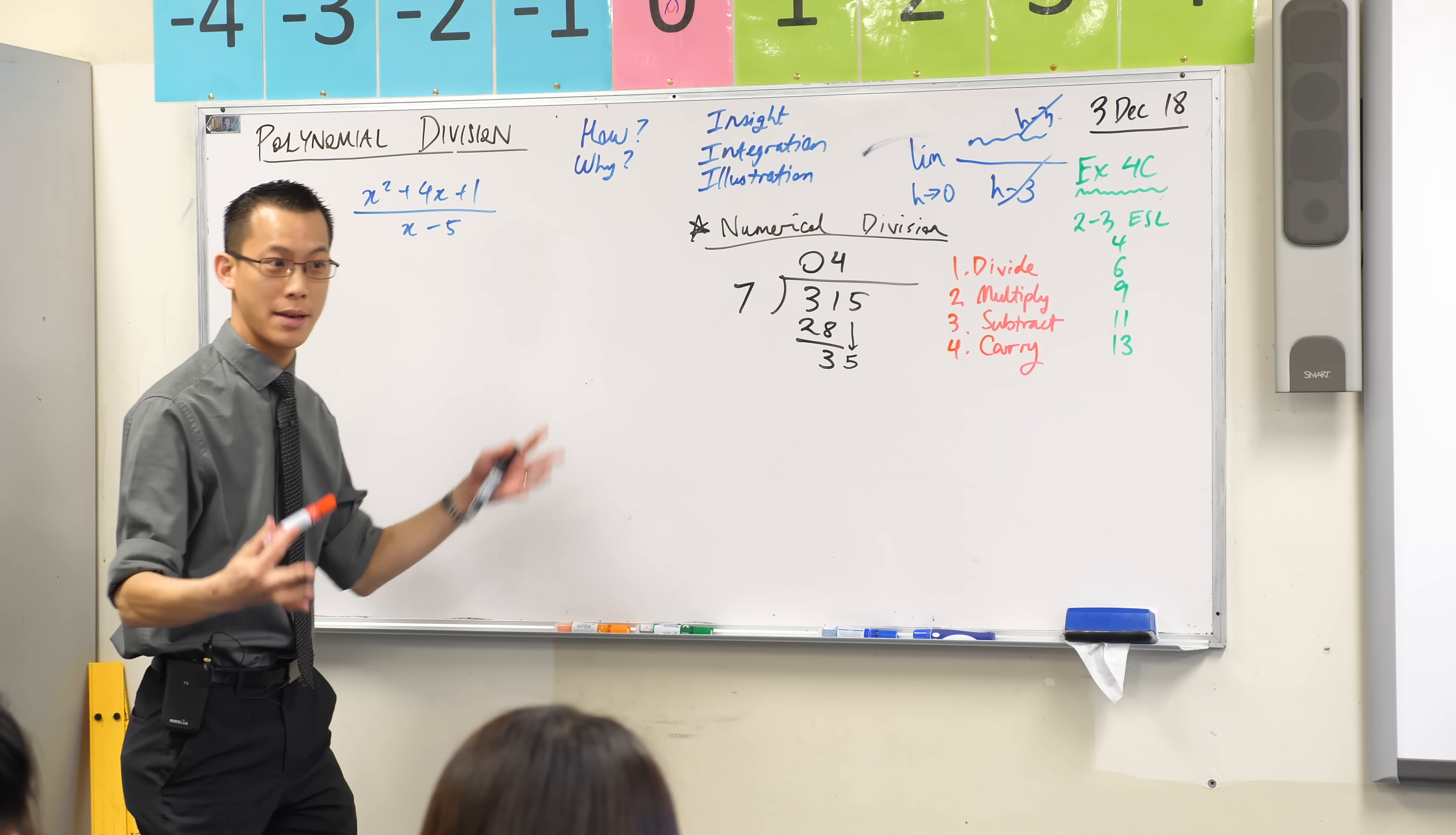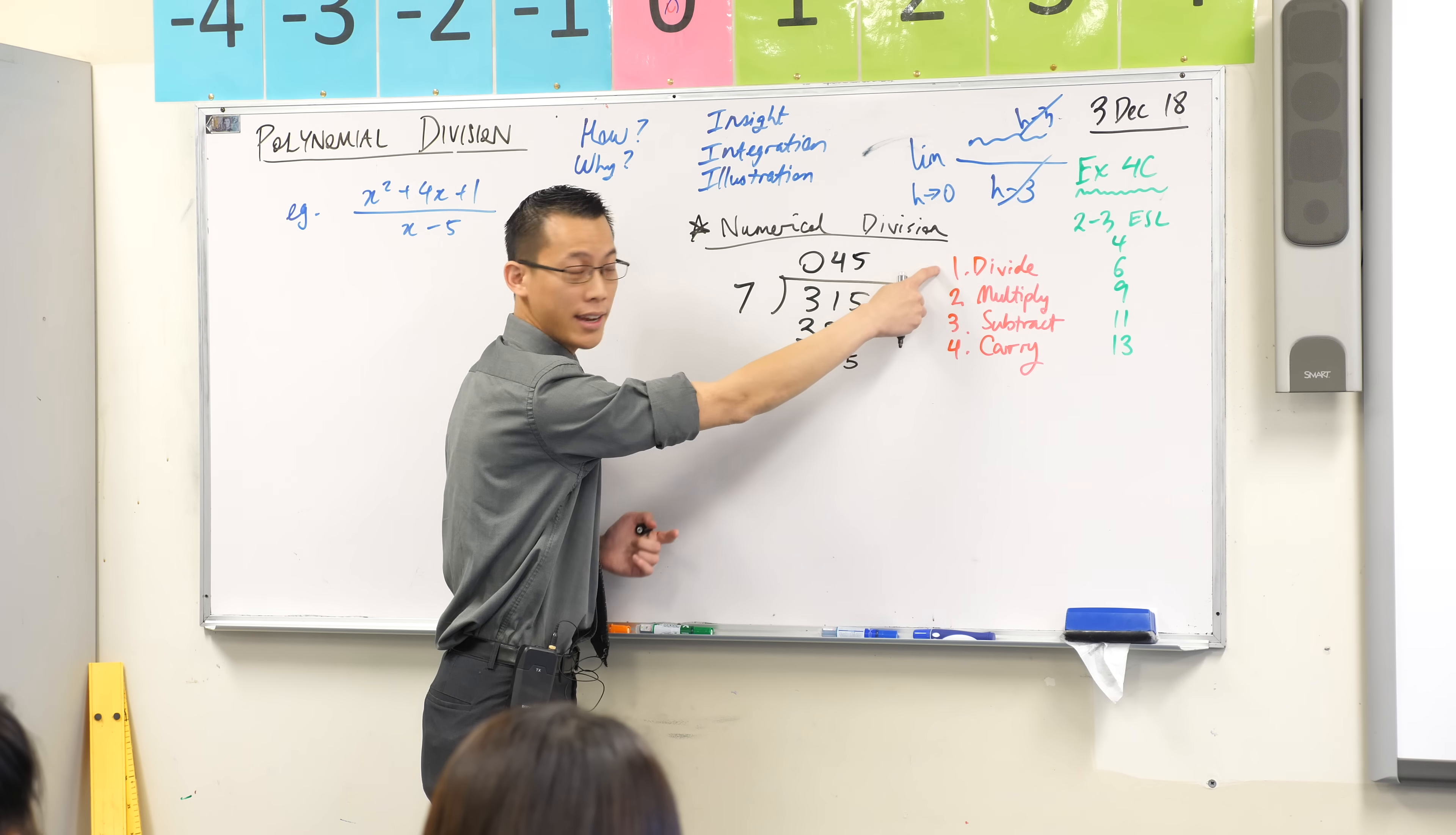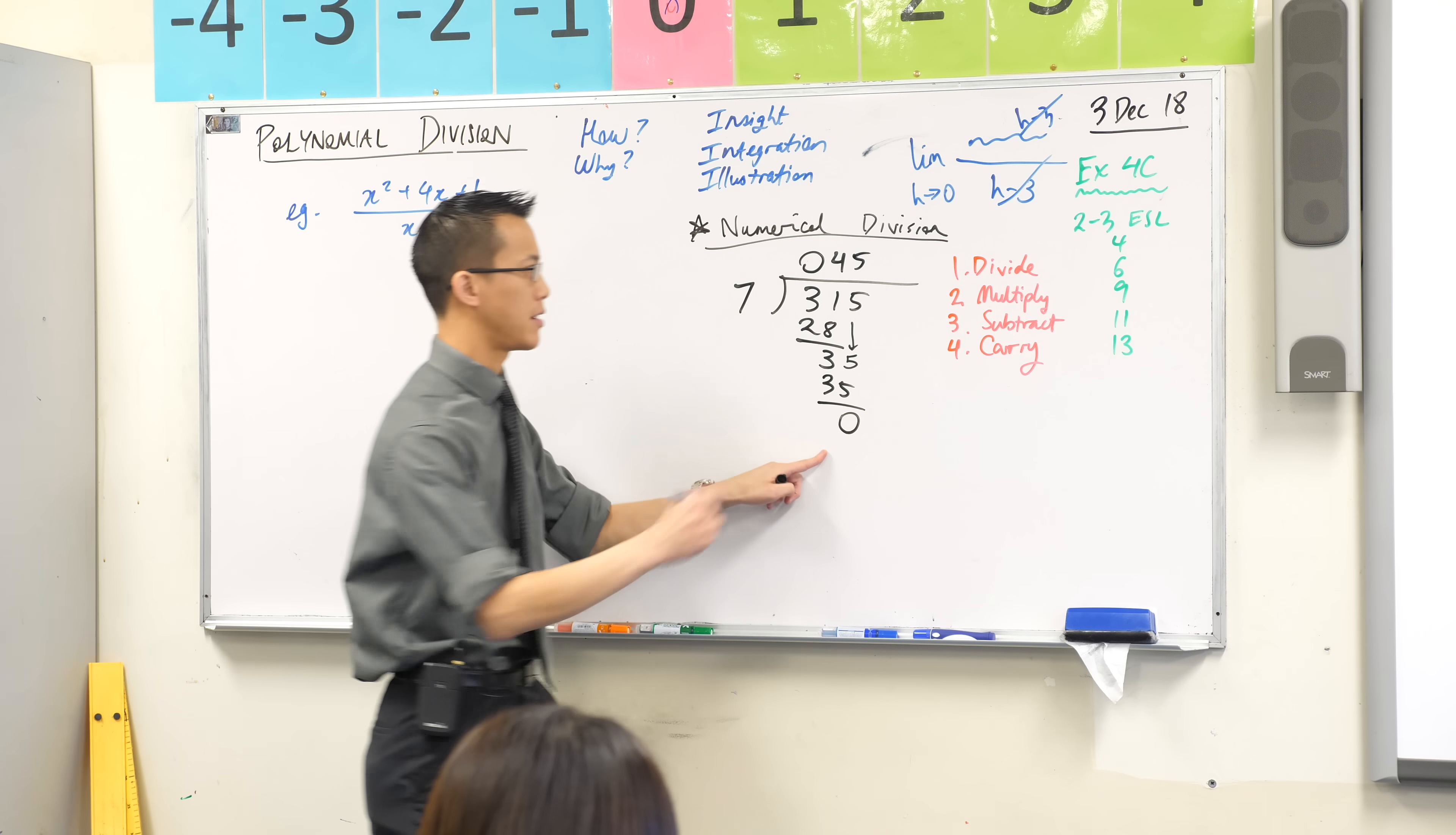Carry, and then we start all over again. The dance recommences. And we're going to go through again. We're going to divide. Conveniently this time we get exactly five. To double check, we then go back through. Now we're going to multiply, which gives us 35. Now what? We subtract. At this point, I no longer have any more digits to carry. What does that zero mean down there? That's the remainder.